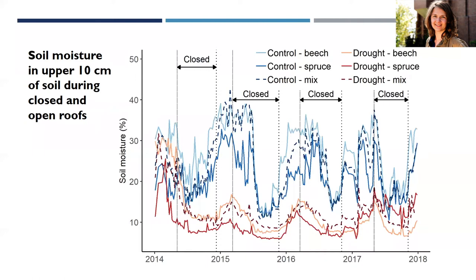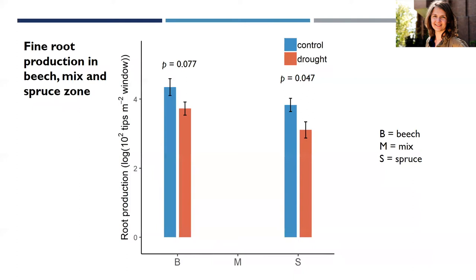We also had soil moisture sensors installed in the plots to verify that the throughfall exclusion roofs were actually doing their job. In the graph showing soil moisture in the upper 10 centimeters over the years of the study, you can see that the drought treatment is working — we get reduced soil moisture when the roofs are closed. We can also see that even when the roofs are open, soil moisture isn't fully recharged.